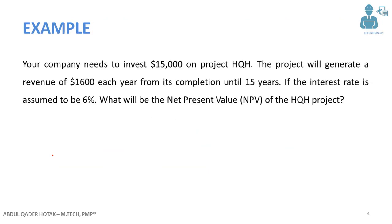So let's see some examples and see how NPV is actually used. As you can see in this example, your company needs to invest $15,000 on project HQ Edge. The project will generate revenue of $1,600 each year from its completion until 15 years. If the interest rate is assumed to be 6%, what will be the net present value of the HQ Edge project?